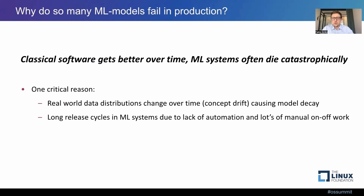If you combine this natural decay over time with the fact that most ML systems have pretty long release cycles — because there's lots of manual one-off work involved and they often lack automation — then you end up in a situation where your model suddenly doesn't work anymore but you can't quickly update it. The system dies and doesn't bring any value anymore. That is very often why ML systems stop working properly.